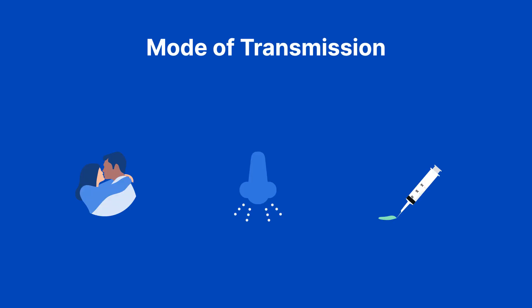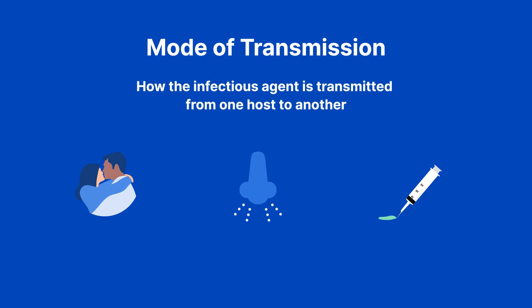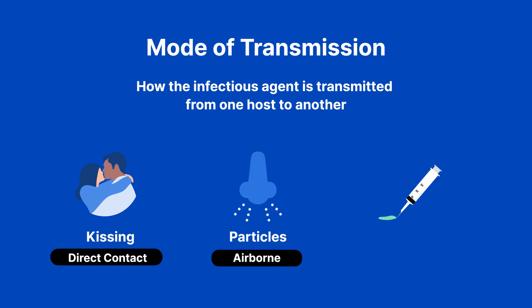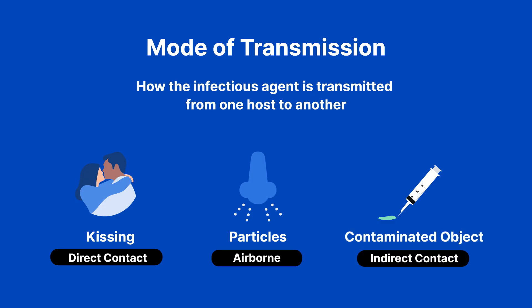The mode of transmission acts as the delivery method — this is the fourth link. The mode of transmission determines how the infectious agent is transmitted from one host to another. It can occur through direct contact, such as kissing, extremely small particles that remain suspended in the air like those produced when you sneeze, or use of contaminated objects such as needles. Transmission can occur through direct contact, airborne contact, or indirect contact.